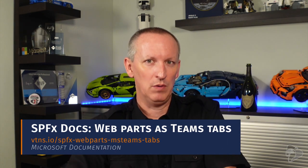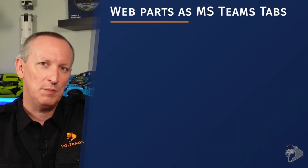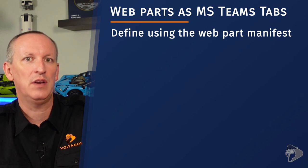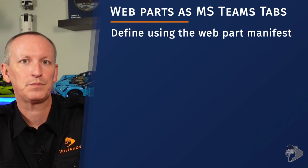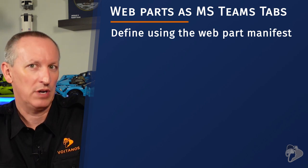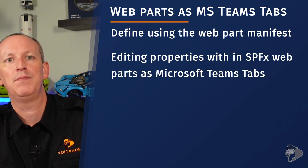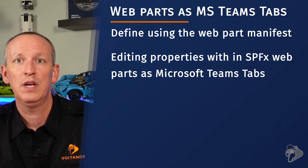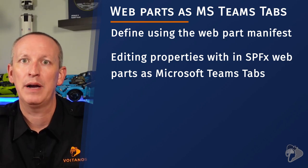By default, the supportedHosts property contains the string 'SharePointWebPart', indicating it can be added as a web part. If you use the string 'SharePointFullPage', it tells SharePoint that this web part can also be added as a SPA and should be included in the list of template options when creating a new page. For the MS600 exam, the only thing you'll be tested on regarding Microsoft Teams is how to use SPFx web parts to create and implement a custom Microsoft Teams tab. You specify this by adding the string 'TeamsTab' to the supportedHosts array in the web part's manifest.